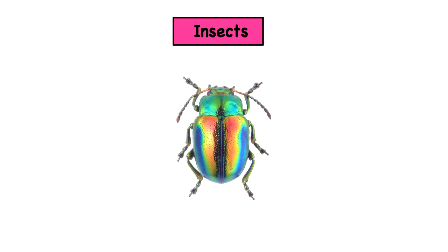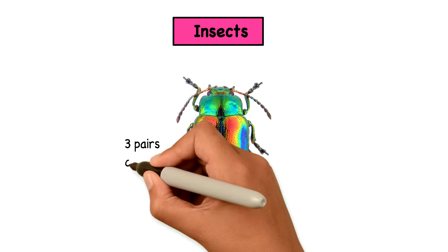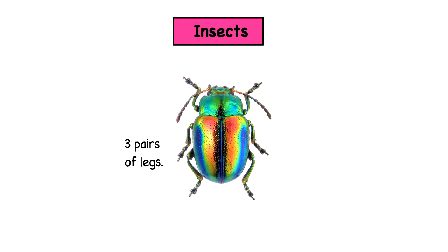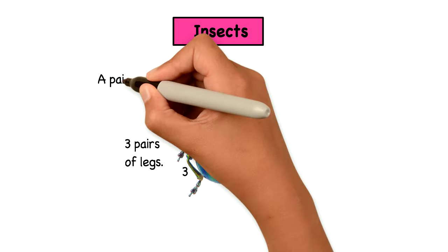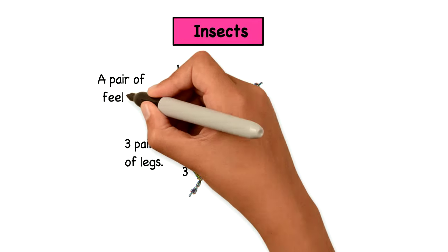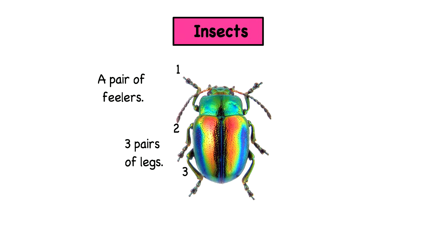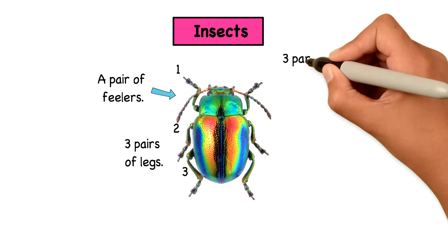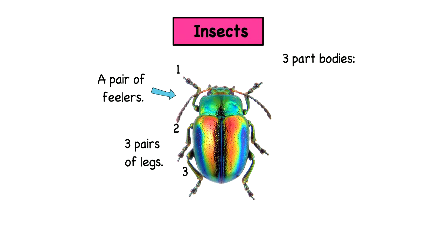Insects. They have three pairs of legs. Can you see them? One, two, three. They have a pair of antennae. And their bodies are divided into three parts.